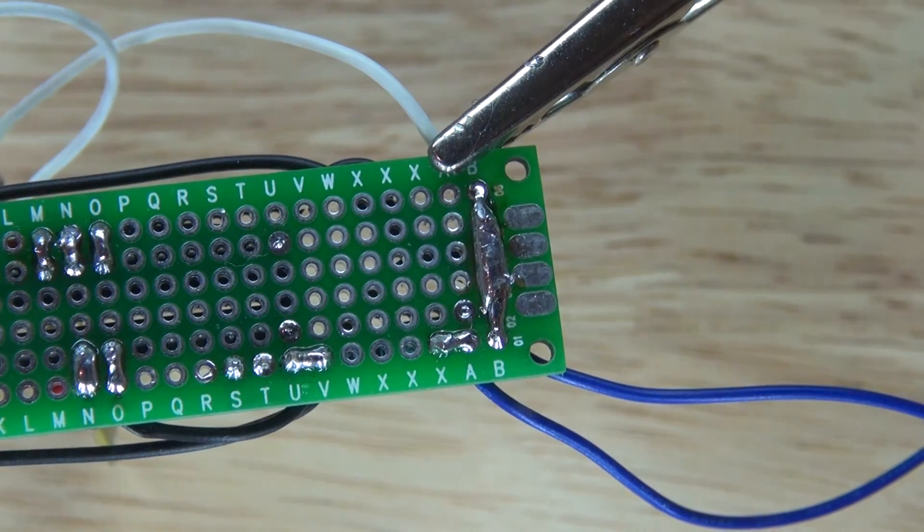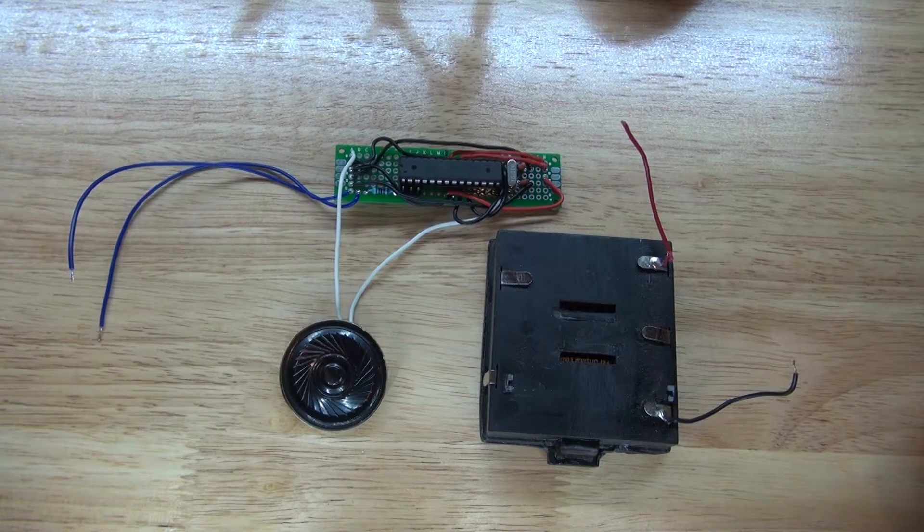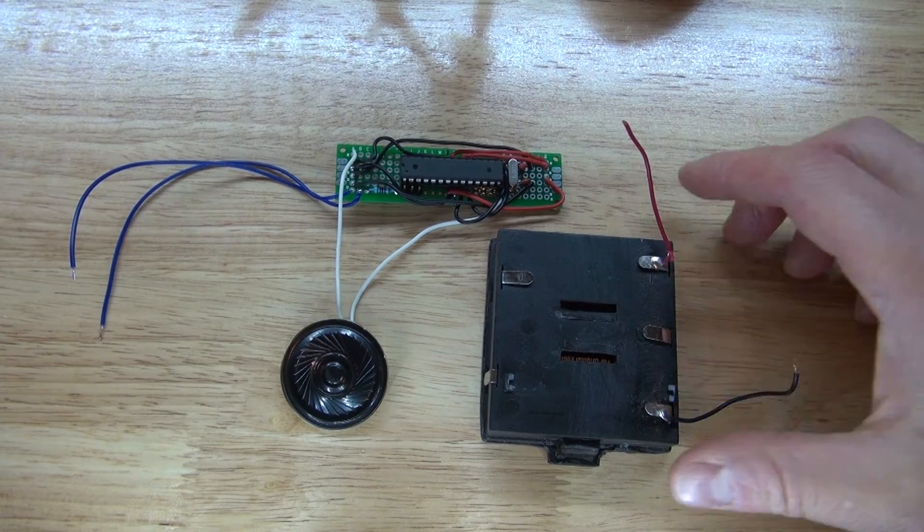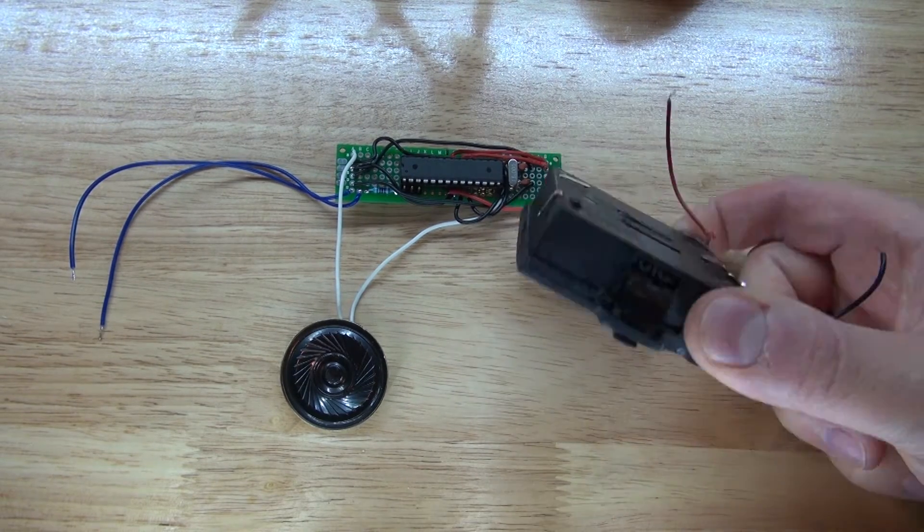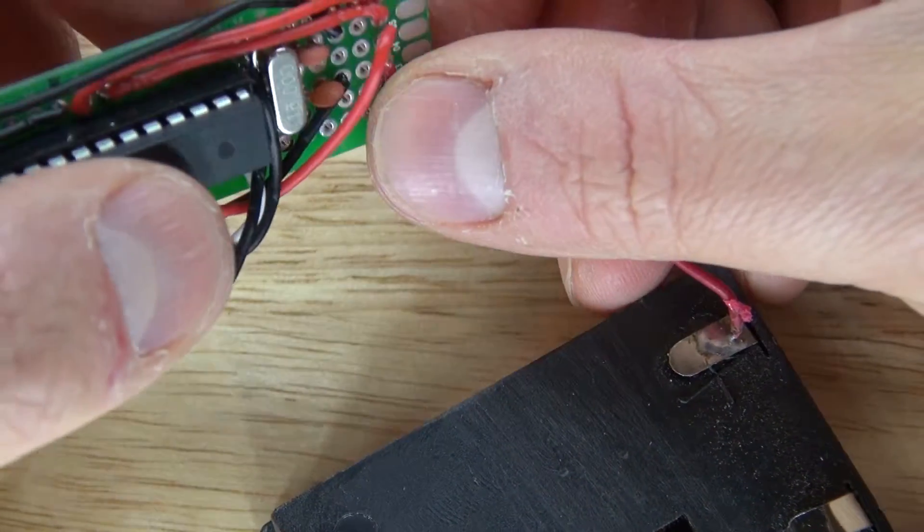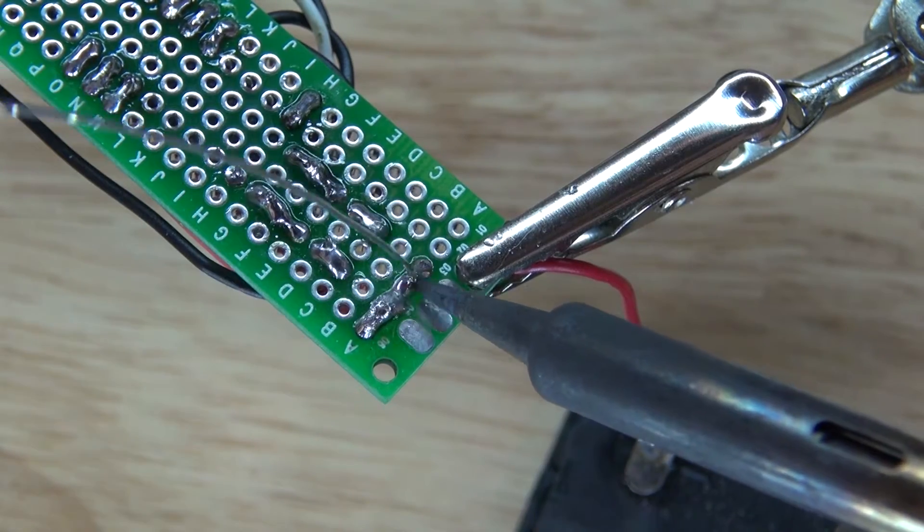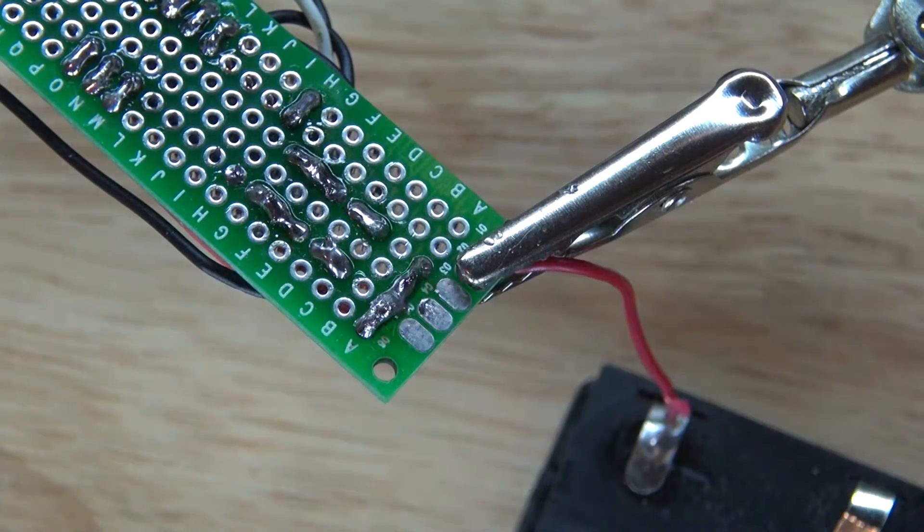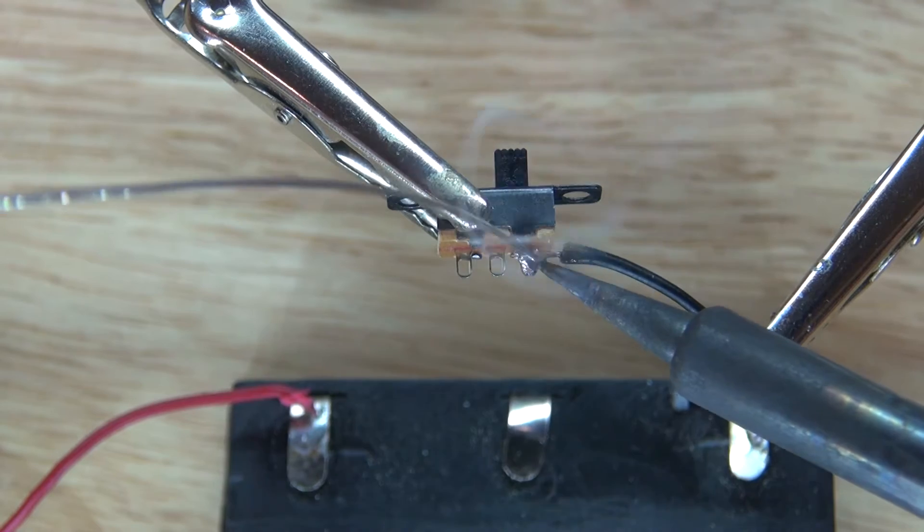Okay, soldering the speaker to ground. And now the speaker is soldered to ground. Now it's time to power the circuit by attaching this battery pack. Positive to positive.